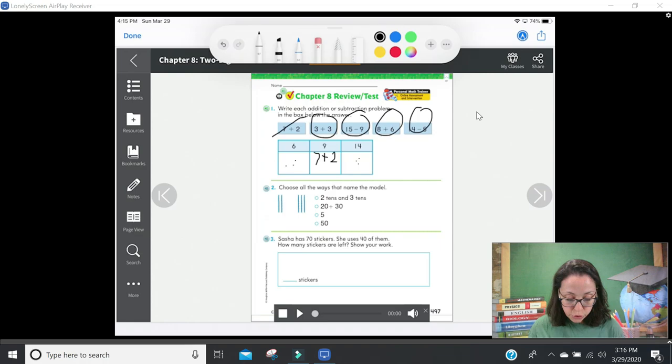Put your finger on number two. It says choose all the ways that name the model. Escoge todas las maneras que nombran este modelo. It says all the ways, so there's going to be more than one answer. I see two tens here and then three tens. I'm going to tell you that the first one is definitely one of our answers. I'm also going to give you a clue and tell you that three of these are the correct answer. There's only one that does not get colored in. Tres de estas son la respuesta correcta. Go ahead and do number two and come back when you're ready.